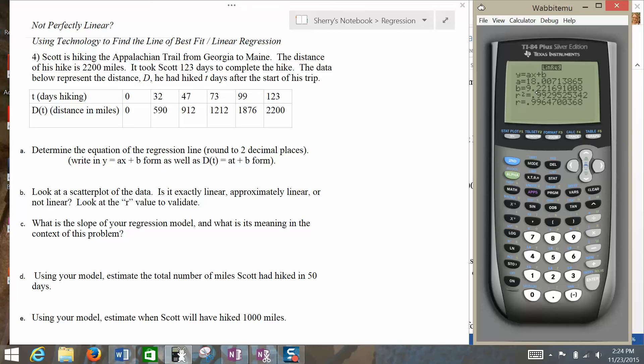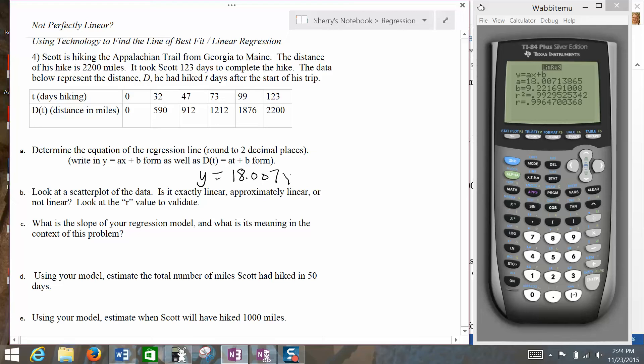So for our Part A here, what we can do then is go ahead and write Y equals our A is 18.007X, or I guess we'll just do X. I guess it should be T really, but that's okay, plus our B, which in this case is 9.222. So that will be our linear regression equation as we start out.